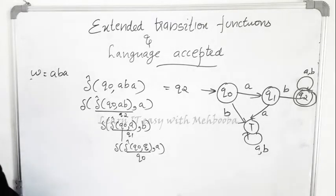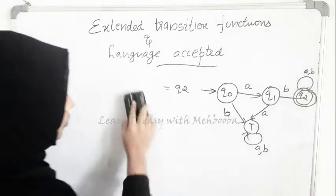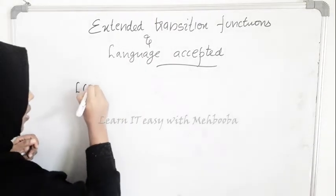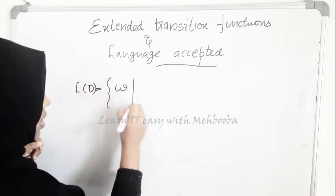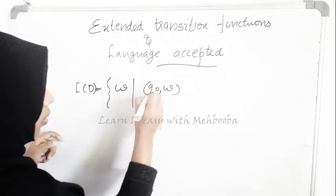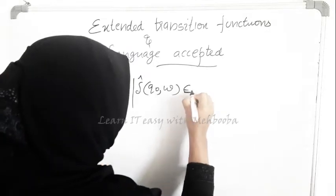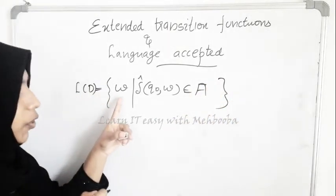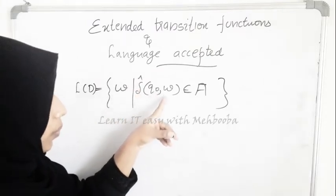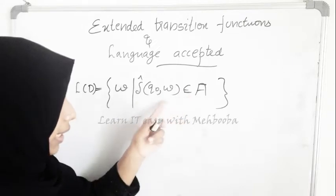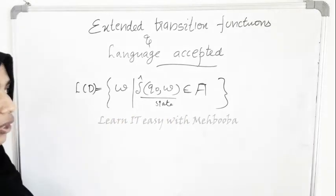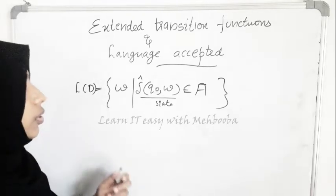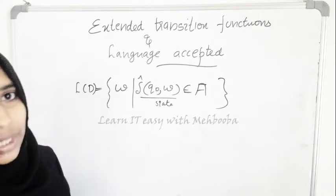Now we will define the language accepted by a DFA. The language accepted by a DFA D is defined as L(D) — the set of all strings W such that delta-cap(Q0, W) is an element of F, the set of final accepting states. That is, when you apply W to the start state Q0, you get a state that is in the set of accepting states.